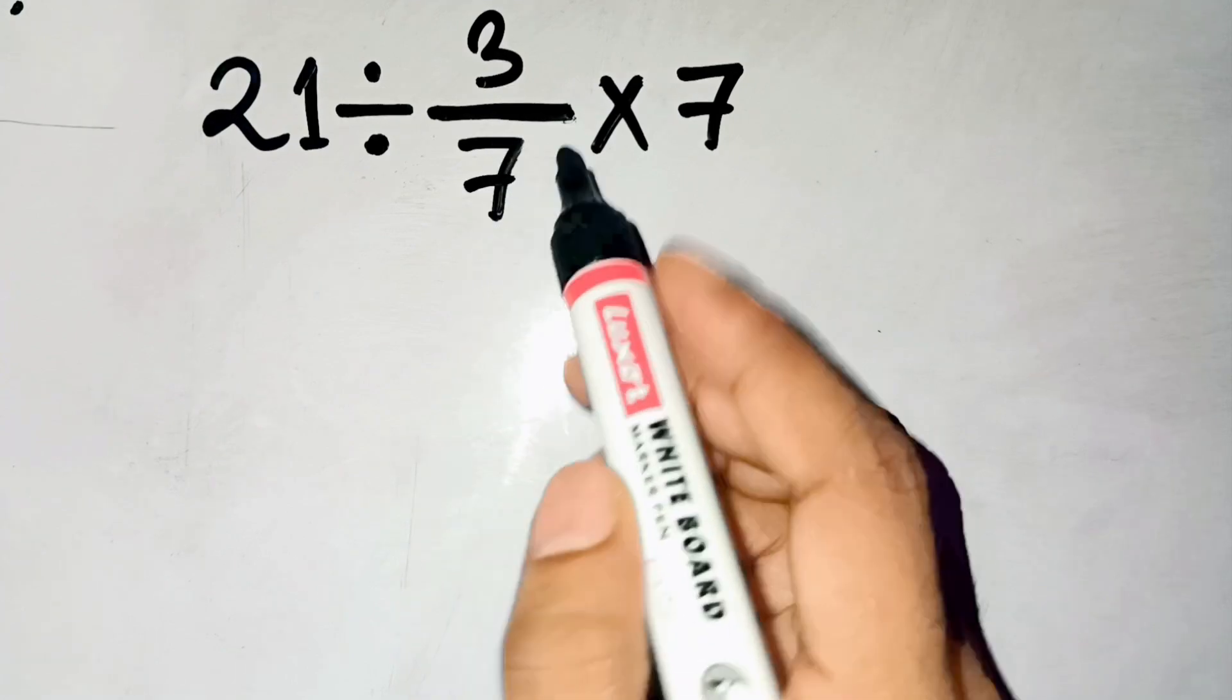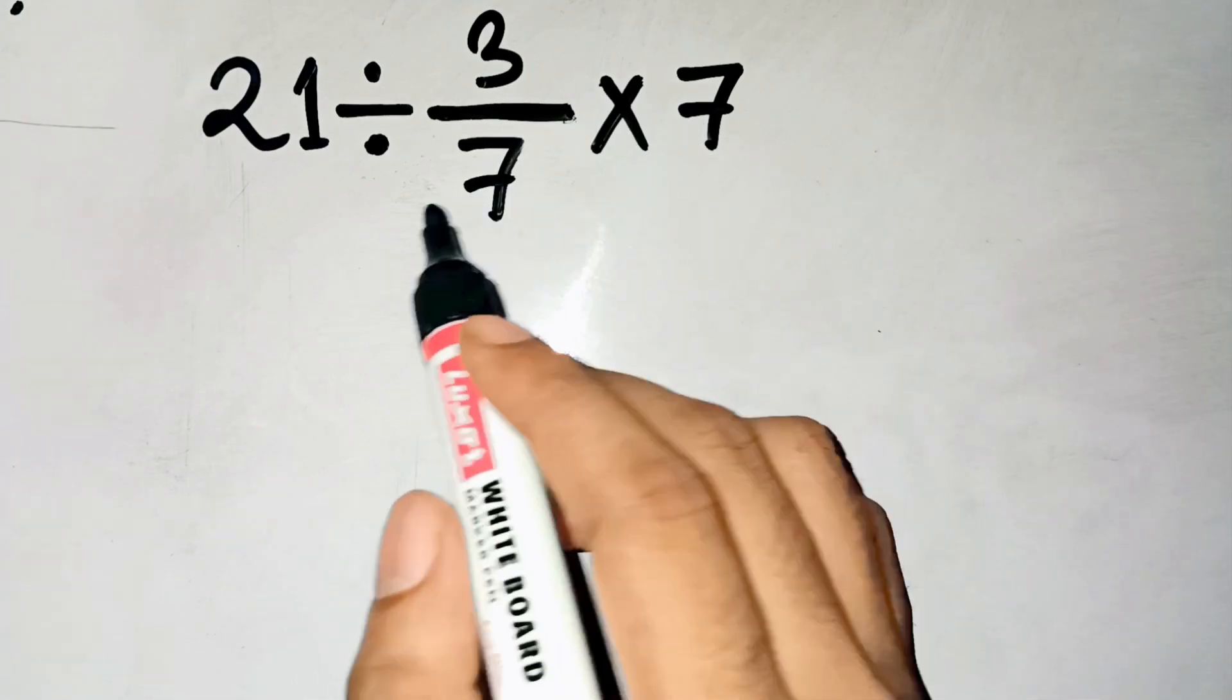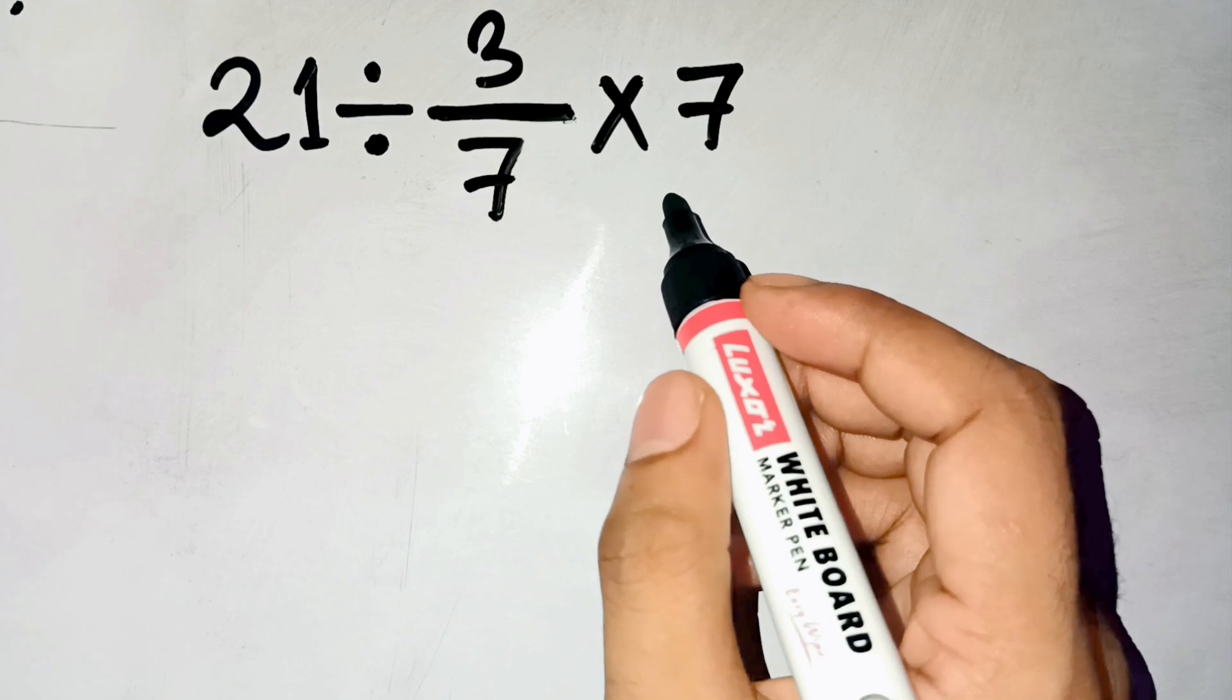When we see 3 over 7, our mind jumps to fraction mode. We think it's stuck together, so we try to simplify too early.